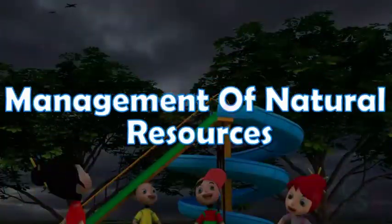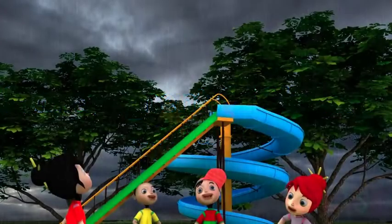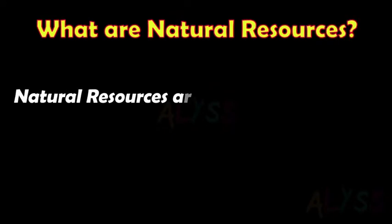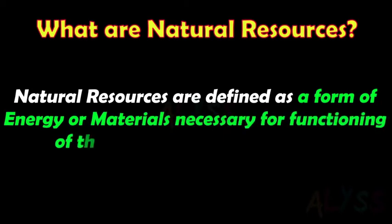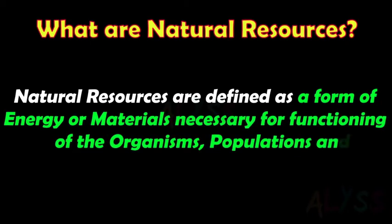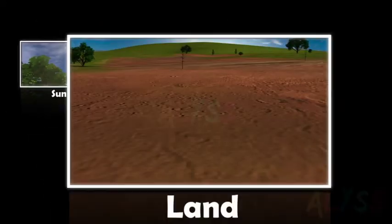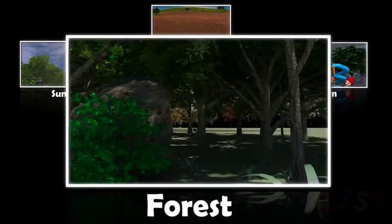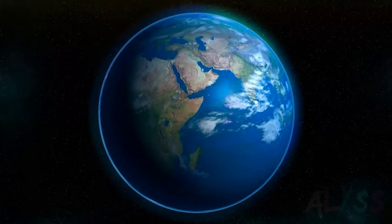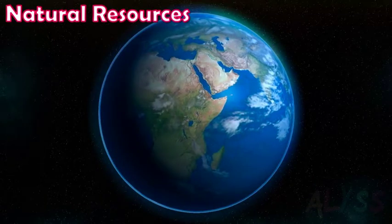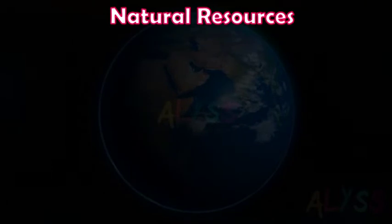Management of natural resources. Rain is a natural resource. What are natural resources? Natural resources are defined as a form of energy or materials necessary for the functioning of organisms, populations, and ecosystems. Or in simple language, everything provided by nature to support the existence and survival of living beings on the earth are called natural resources.